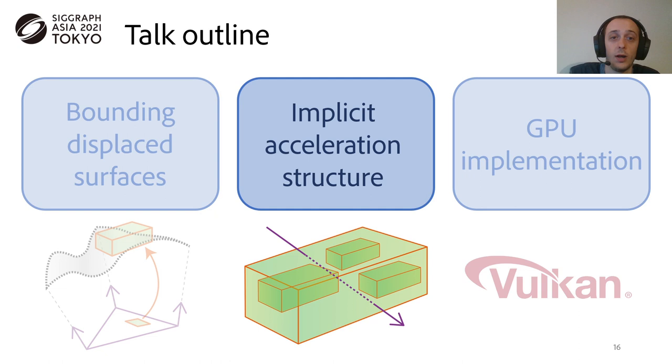Now that we have a process to compute bounds for UV domain, let's see how to use these bounding volumes for accelerating the intersection routine.